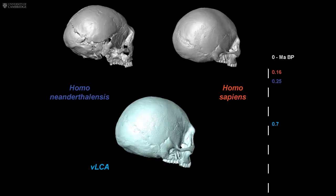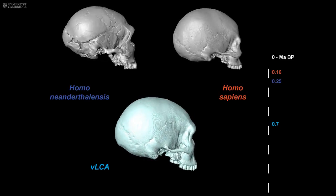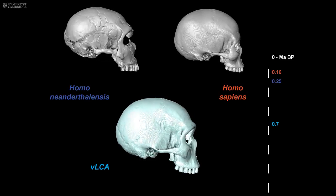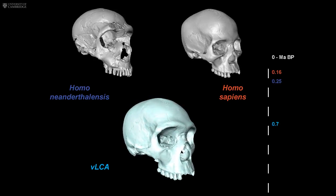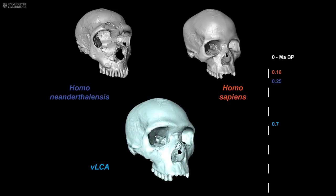We compared our digital skull to the fossil record. Our results support the existence of an ancestral population to modern humans and Neanderthals, which lived between 700,000 and 300,000 years ago, both in Europe and Africa.